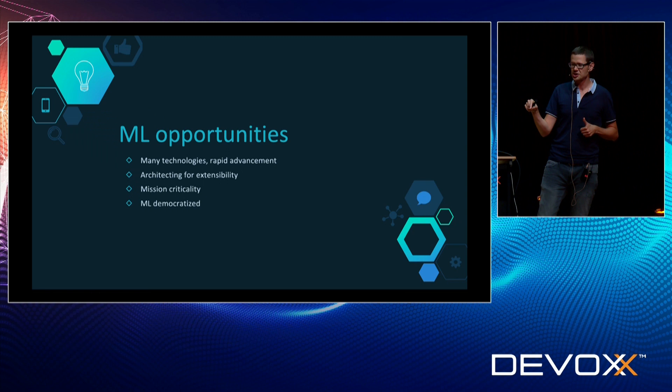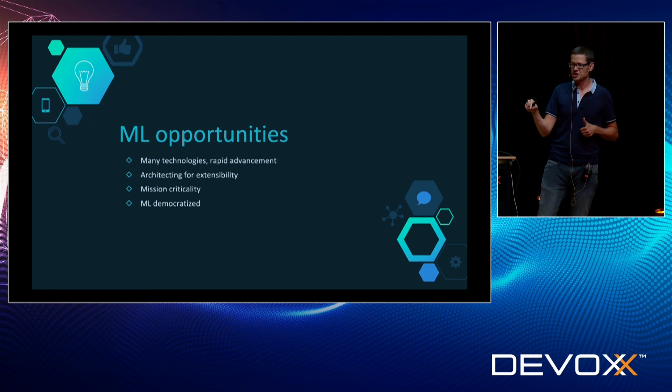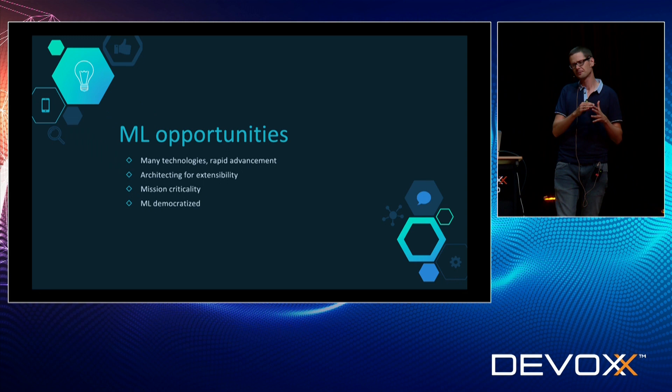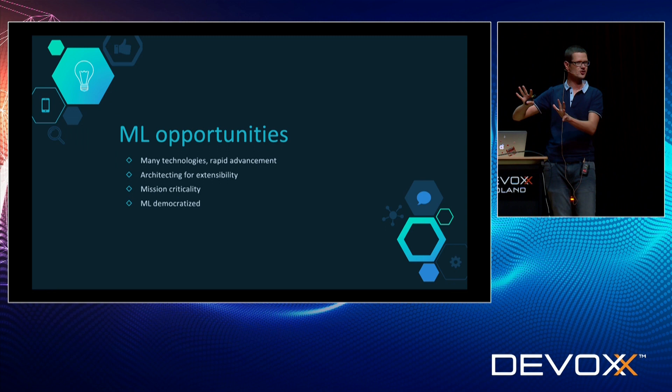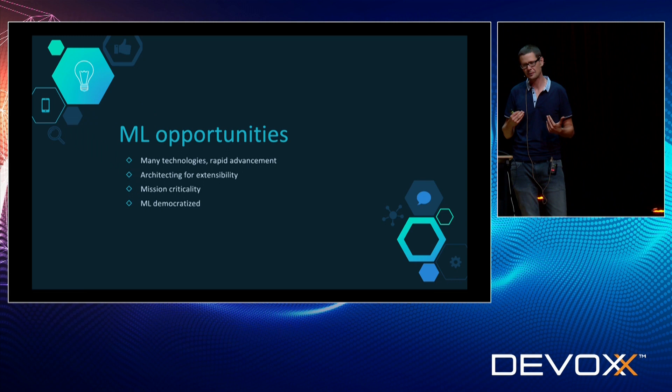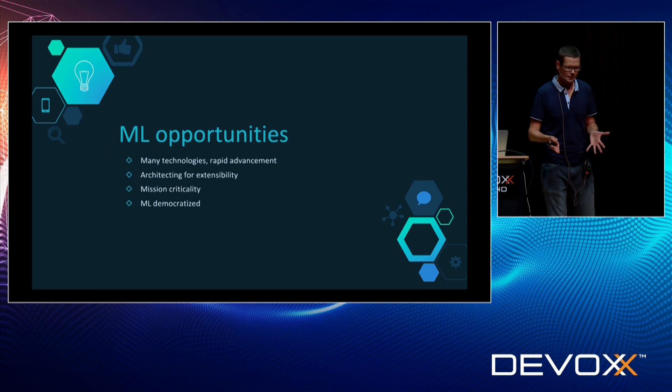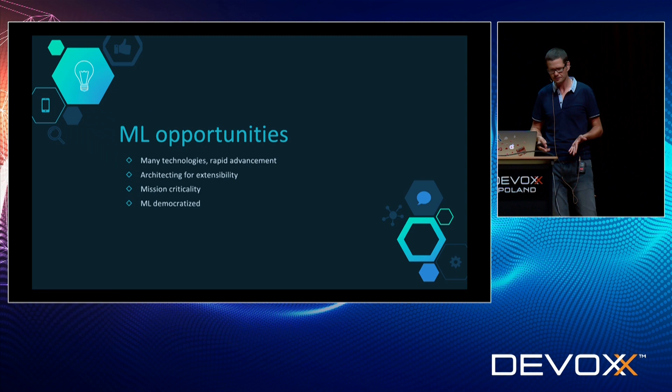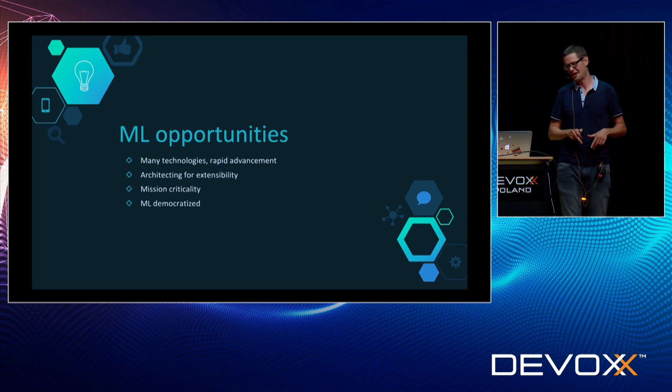Machine learning is also being democratized. It's not only a small group of scientists sitting in a corner — it's becoming something used throughout the entire company. We see that in all product groups. My group is a foundation group that builds tools for engineers and improves developer productivity for all engineers at LinkedIn. This is one of the reasons I'm doing this talk — my prediction is that you will be involved with machine learning at some point.